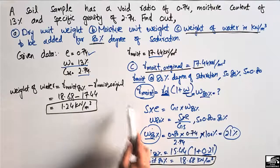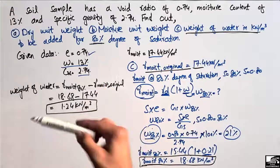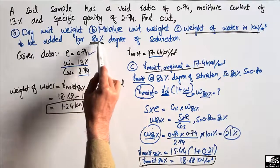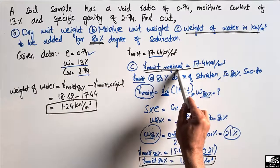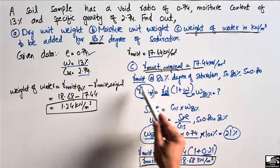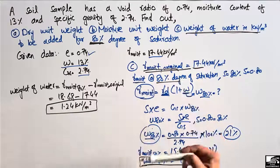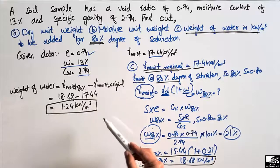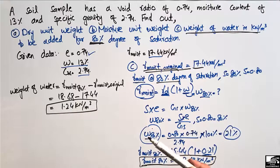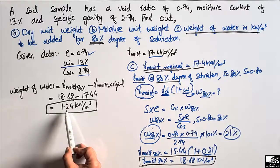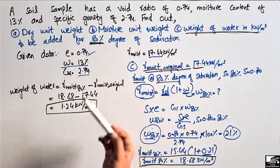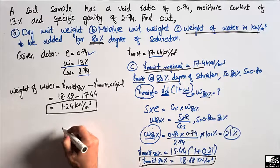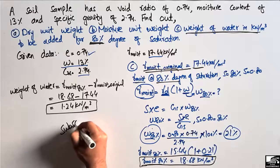To summarize: to find the weight of water to be added for a different degree of saturation, find the original γmoist first, then find γmoist for the target degree of saturation, and subtract. You can also convert this weight into mass by dividing by the density of water. Hope you understood — don't forget to subscribe for daily civil engineering videos.